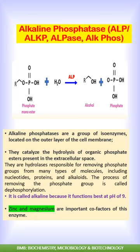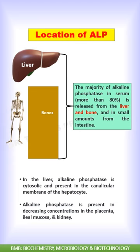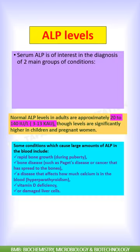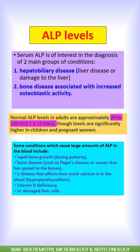Alkaline phosphatase, or ALP, catalyzes the hydrolysis of organic phospho esters. The majority of ALP in serum is released from the liver and bone. Therefore, serum ALP is of interest in the diagnosis of two main groups of conditions: hepatobiliary disease and bone disease.